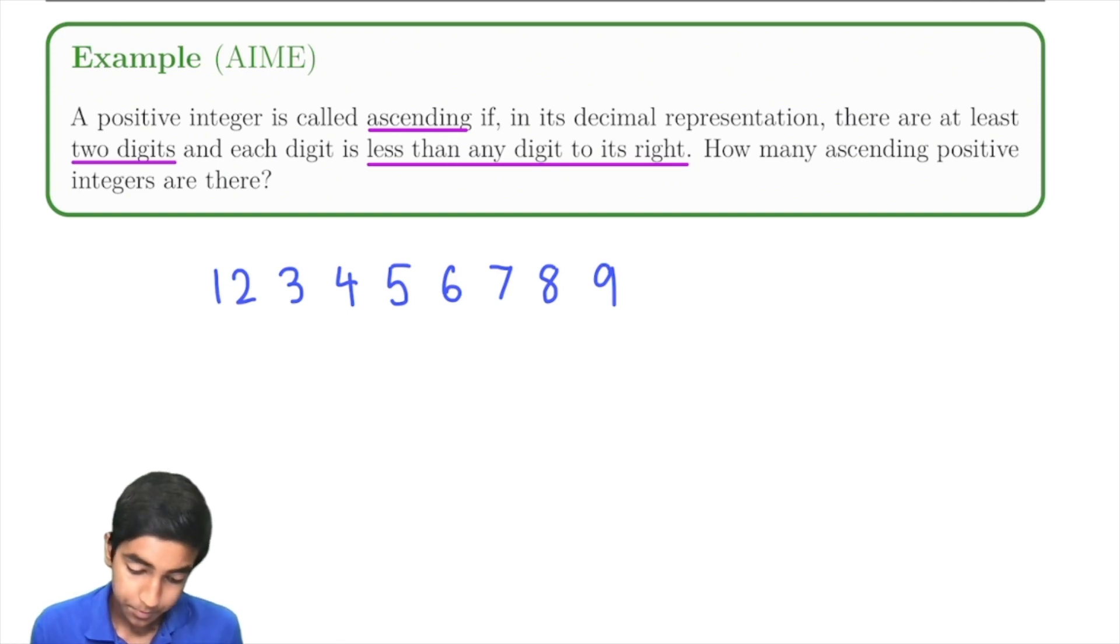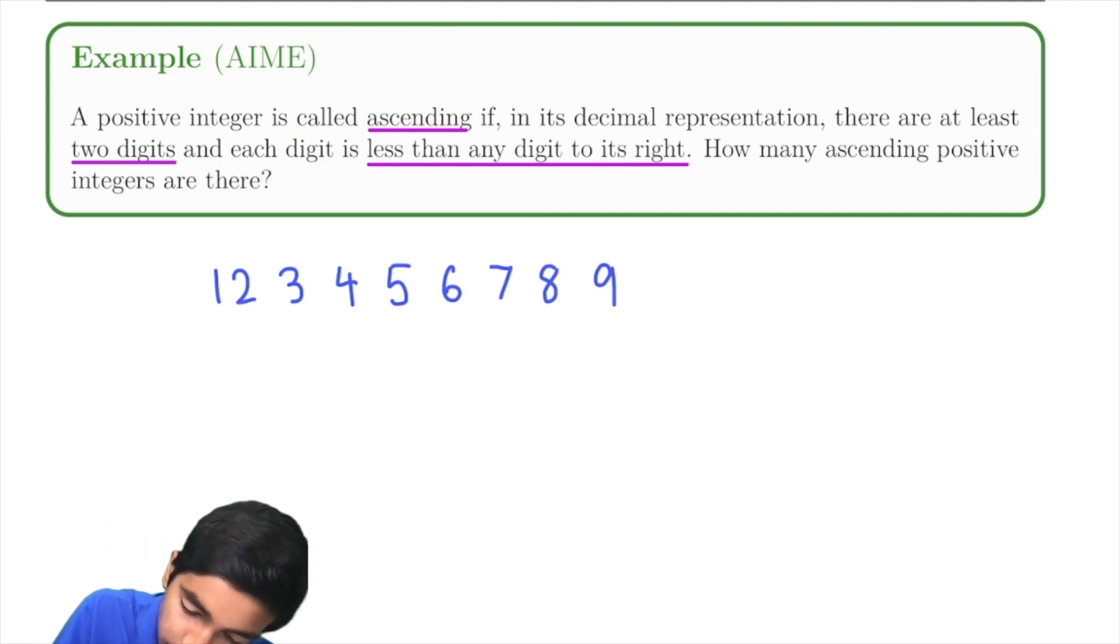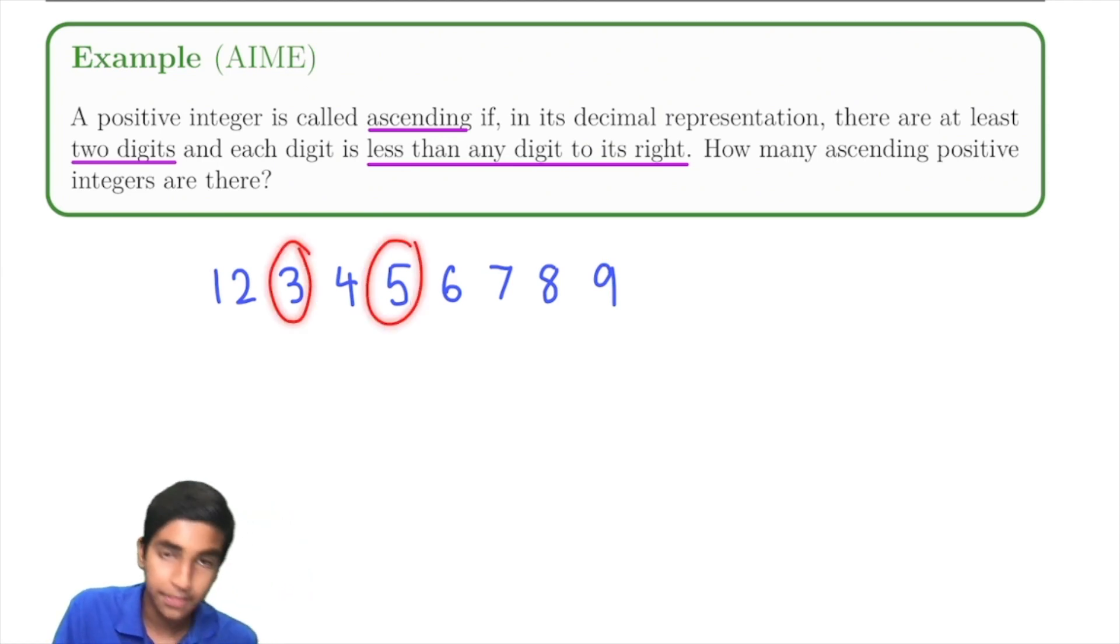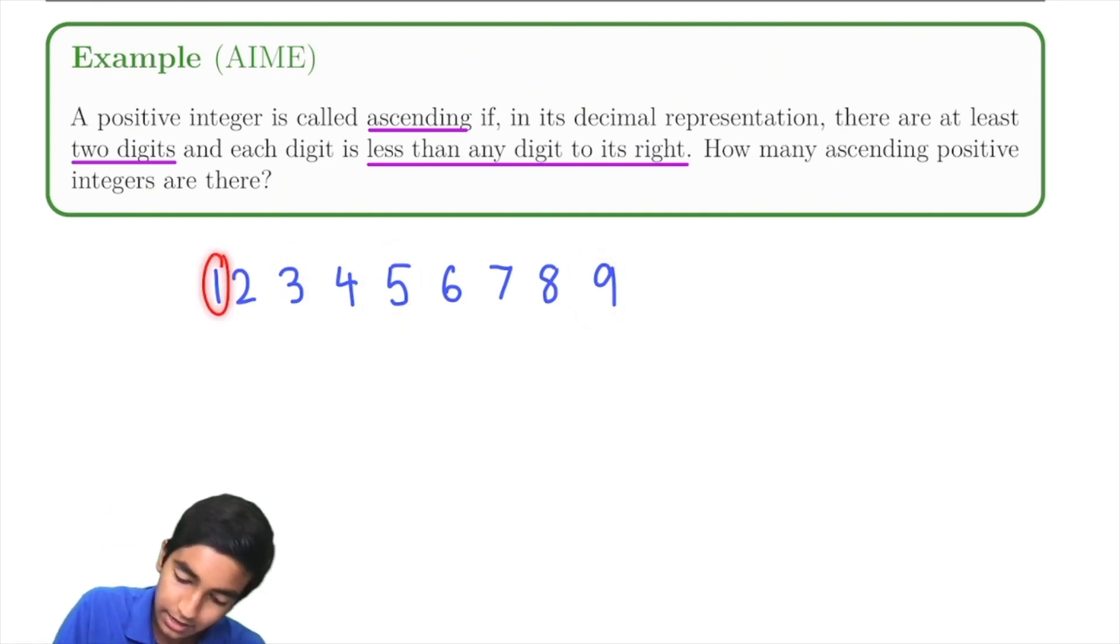We don't necessarily have to have every single digit. For example, we could just select 3, 5, and 9, and that would make a perfectly valid number. Or 1, 7, 8, 9. Or we could even have a large number, like 1, 2, 3, 5, 7, 9.